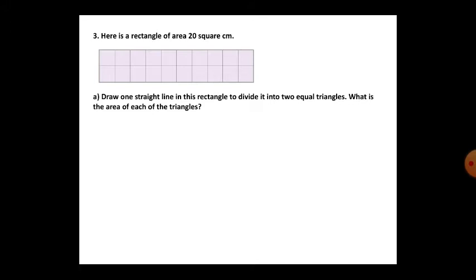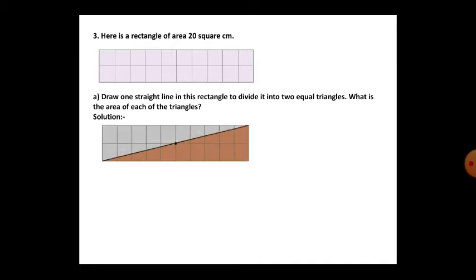Draw one straight line in this rectangle to divide it into two equal triangles. You have to draw one line to divide the rectangle. If you divide with one line, the rectangle becomes two triangles - two equal triangles. See here how it is divided: the brown color becomes one triangle and the gray color becomes another triangle. Both are equal because the rectangle is divided equally.